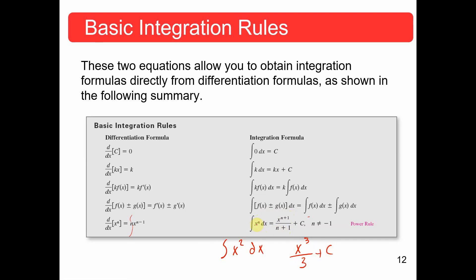The only time this does not work is for the integral of 1 over x. That would be x to the negative one. If we add one, we get x to the zero, and we can't divide by zero. So we have this rule that you cannot use n equals negative one. We have a different formula for the integral of 1 over x.